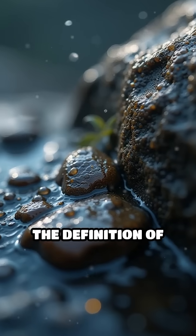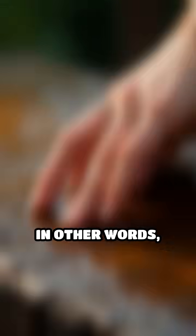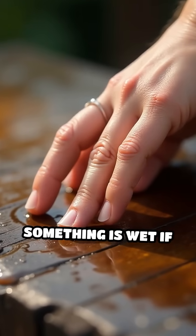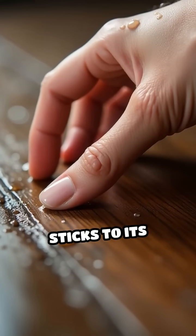Scientifically, the definition of wet involves a liquid adhering to the surface of a solid. In other words, something is wet if it's in contact with a liquid like water, and that liquid sticks to its surface.